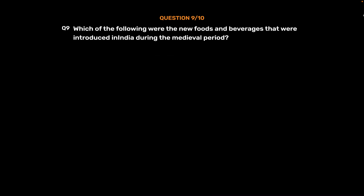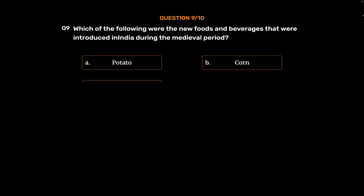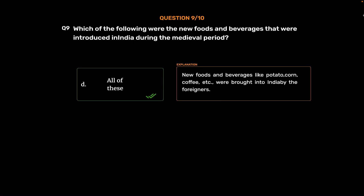Question No. 9. Which of the following were new foods and beverages introduced in India during the medieval period? Option A: Potato. Option B: Corn. Option C: Coffee. Option D: All of these. The correct answer is Option D: All of these. New foods and beverages like potato, corn, coffee, etc. were brought into India by foreigners.